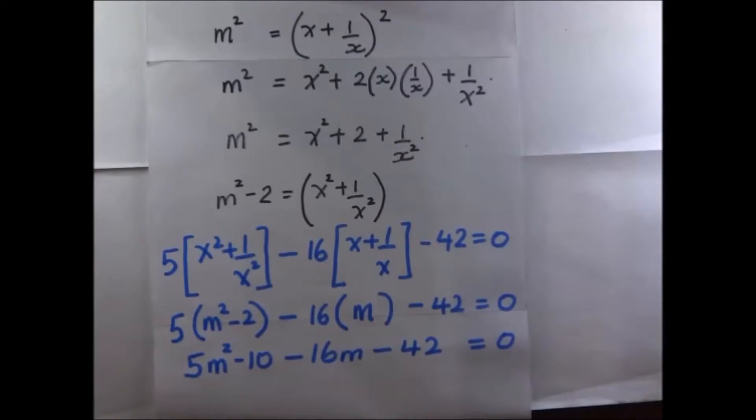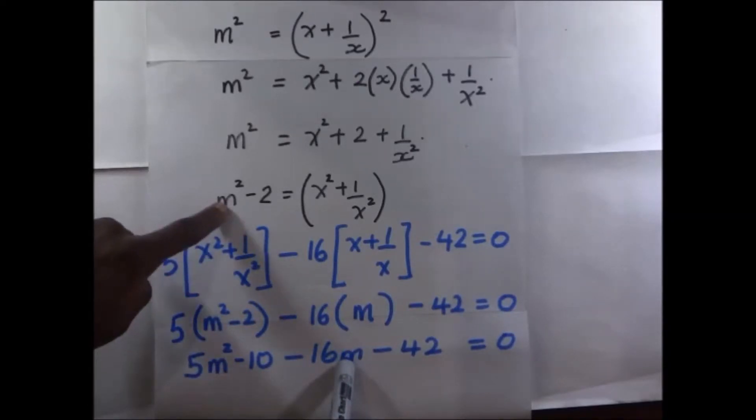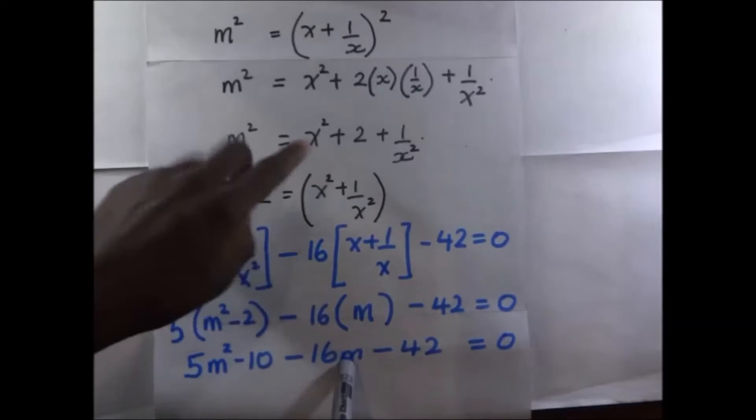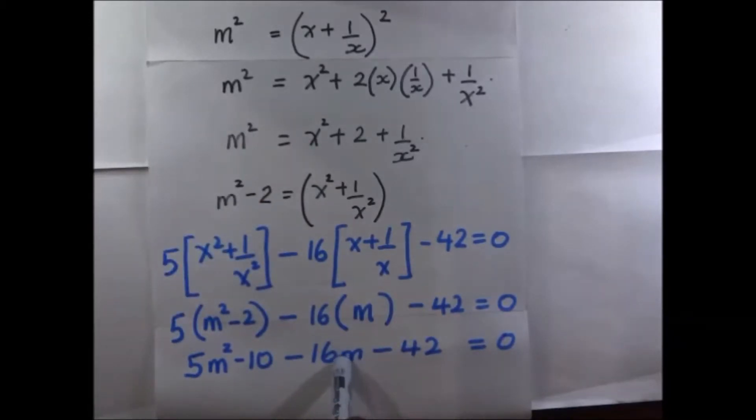Now we have simplified our expression. It has become a quadratic equation. So now all we have to do is find the value of M. After finding the value of M, we substitute it here, and we get the respective values of x. And that is how we will have solved this equation with symmetrical coefficients.